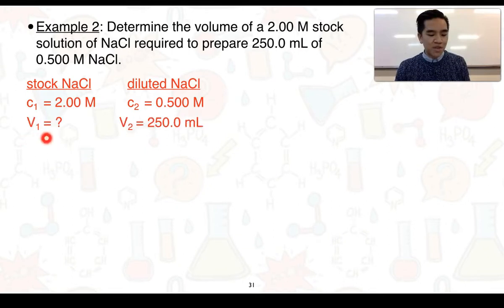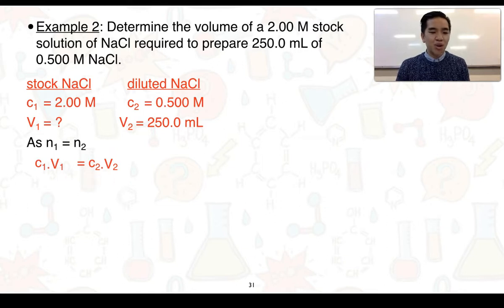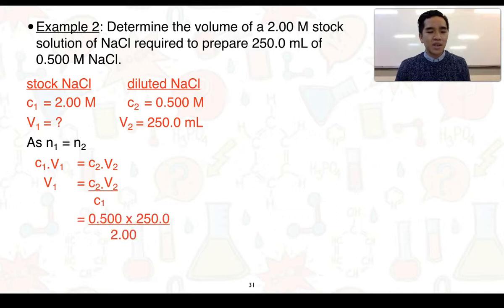We're trying to work out how much of our stock solution we need but we know we end up with a volume of 250.0 mL. We can keep that volume in mL so we're going to work out what V1 is in mL as well. Using the formula c1V1 = c2V2 we need to solve for V1. We rearrange the equation and we get c2V2 ÷ c1. We then substitute our values in and we end up with an answer of 62.5 mL recorded to three sig figs.